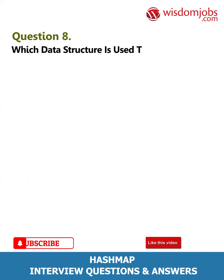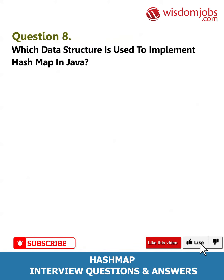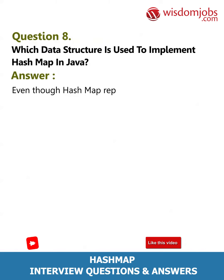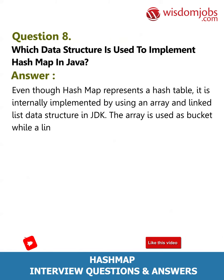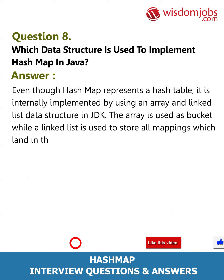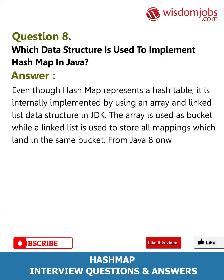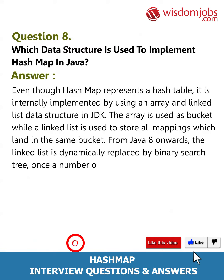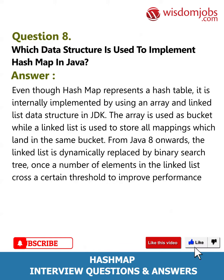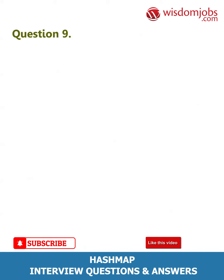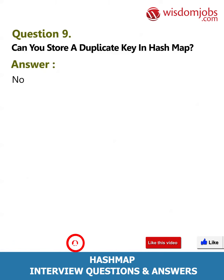Question 8: Which data structure is used to implement HashMap in Java? Answer: Even though HashMap represents a hash table, it is internally implemented using an array and linked list data structure. In the JDK, the array is used as a bucket while a linked list is used to store all mappings that land in the same bucket. From Java 8 onwards, the linked list is dynamically replaced by a binary search tree once the number of elements in the linked list crosses a certain threshold, to improve performance.